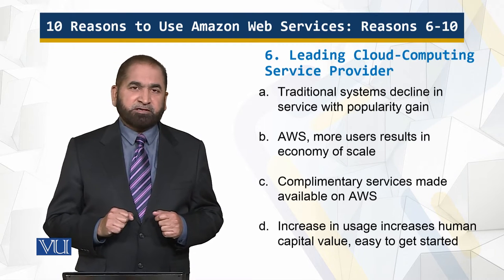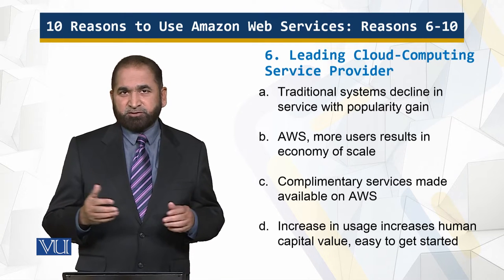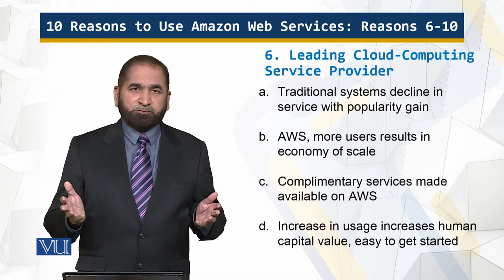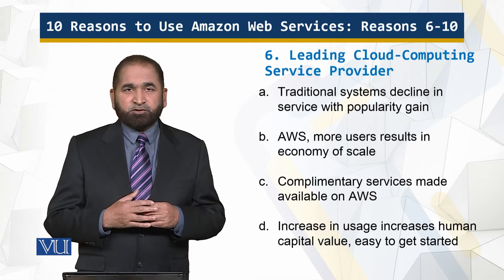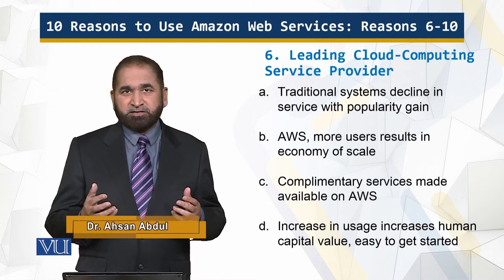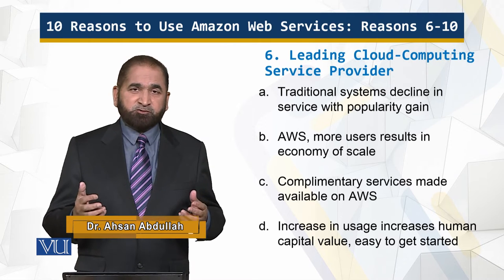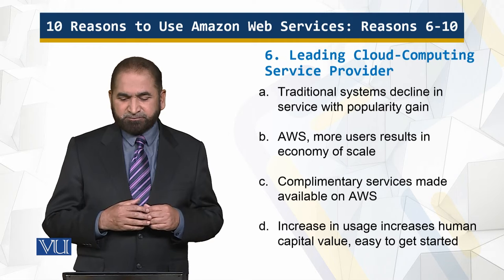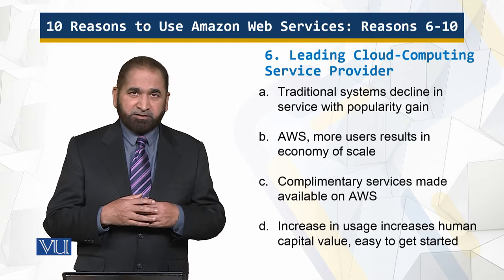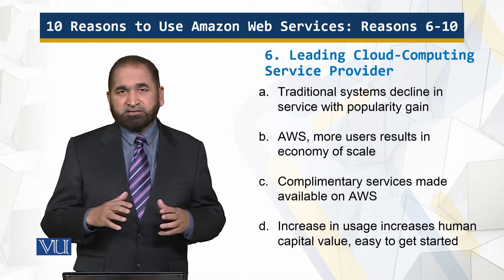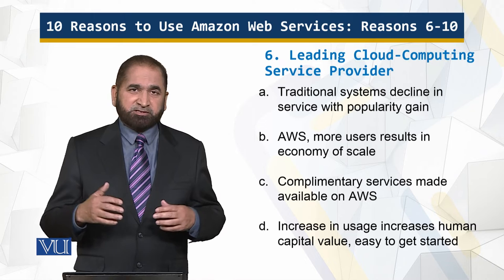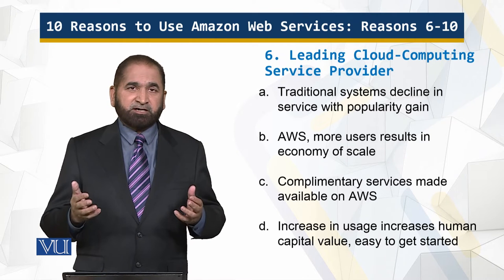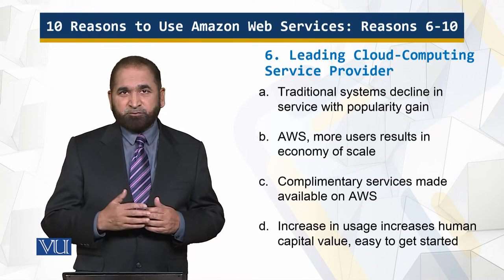Traditional systems decline in service with popularity gain. For example, there is a restaurant in your neighborhood serving good food. People start coming and telling others, so it gets a lot of customers. Since customers are more but space is limited, there aren't enough chefs or space, so service starts to decline. That is not the case with Amazon Web Services because as more users come in, it results in the economy of scale. It's a distributed system, so more hardware and software is added, the overall cost reduces, and those benefits are passed to the users.